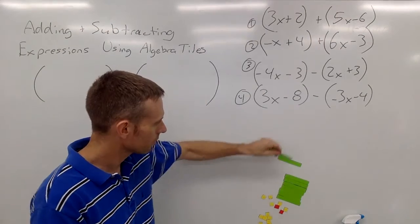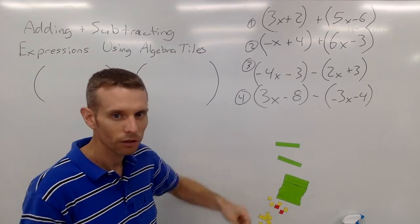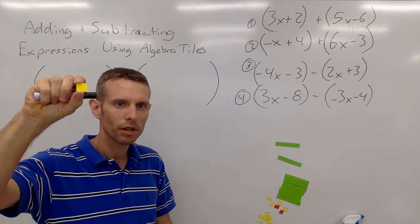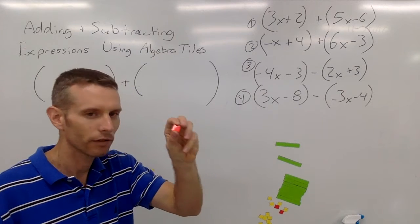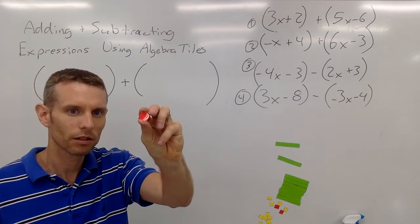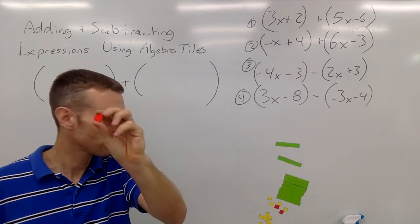And then the smaller squares have a yellow and a red side, and the yellow is positive 1, and the red is negative 1. So if I have three small red squares, that's negative 3.